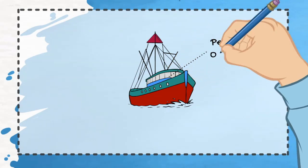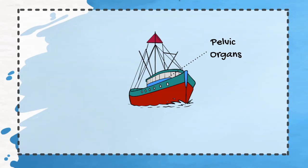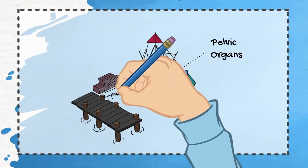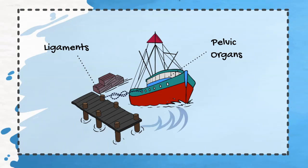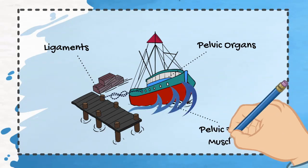The boat represents your pelvic organs, meaning bladder, rectum, and uterus. The ropes holding the boat to the dock represent your ligaments which support your pelvic organs. The water level represents your pelvic floor muscles.